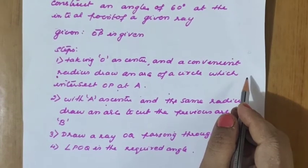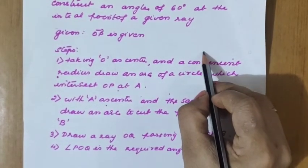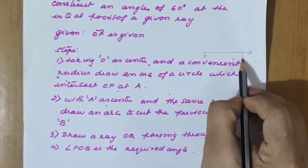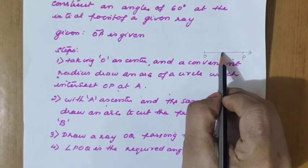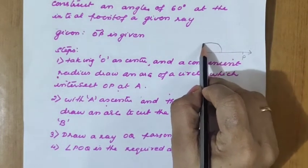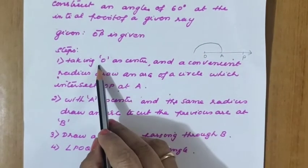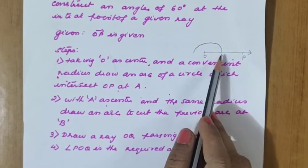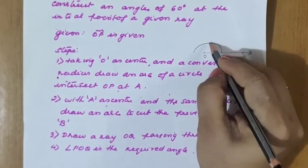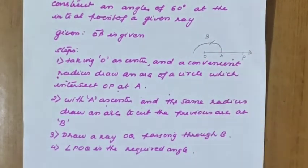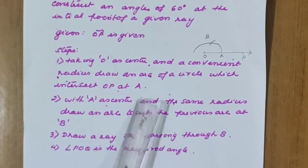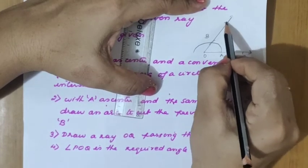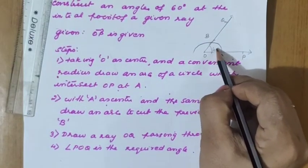Now: construct an angle of 60 degrees at the initial point of the given ray. We have already studied how to construct 60 degrees in lower classes. Let us see the rough work first. Ray OP is given. With O as center and a convenient radius, we draw a semicircle which cuts OP at A. With A as center and the same radius, we draw one more arc at B. Through B we draw ray OQ.